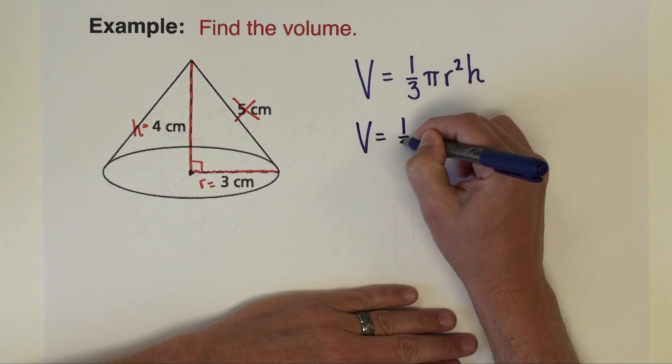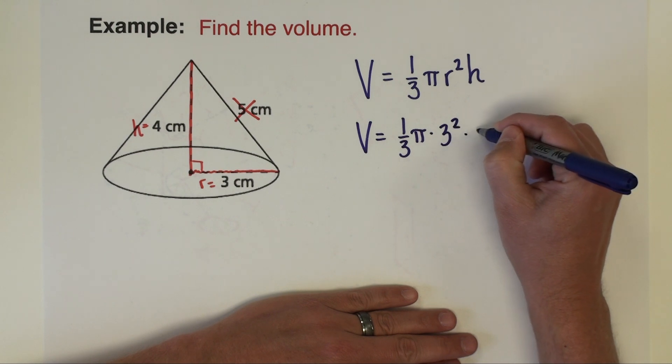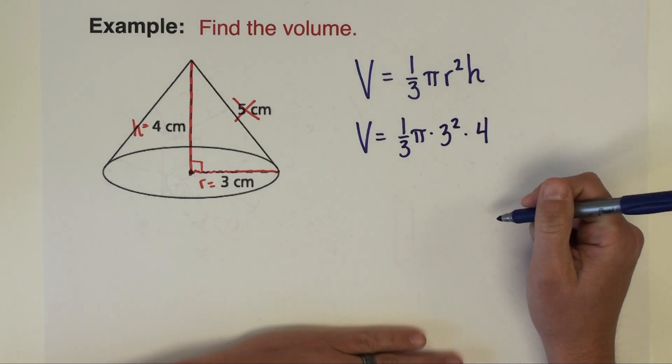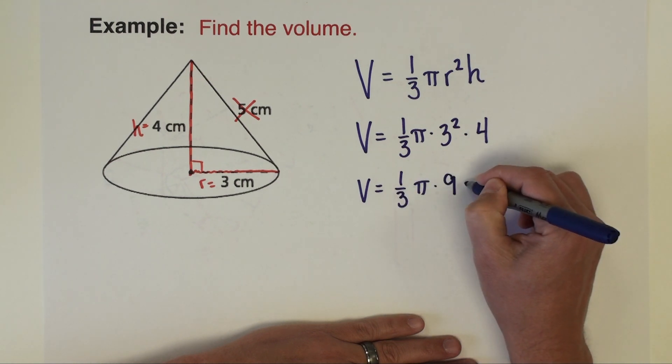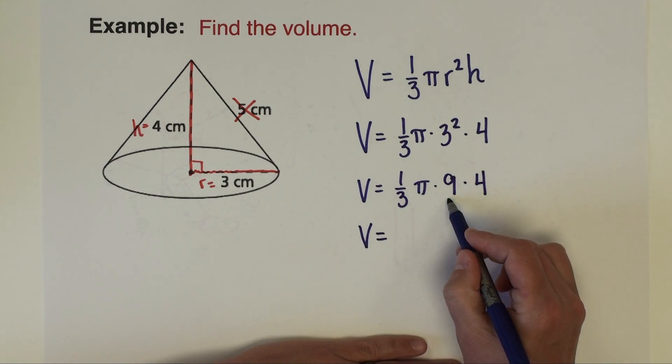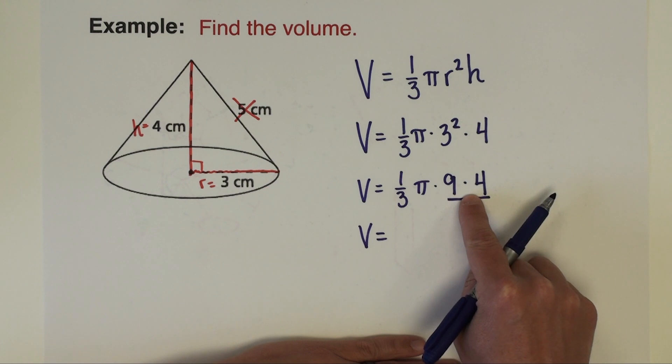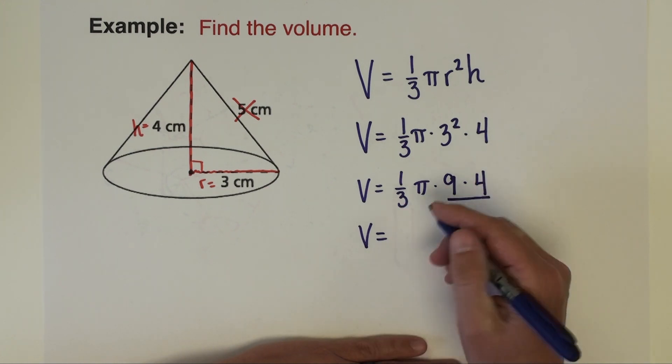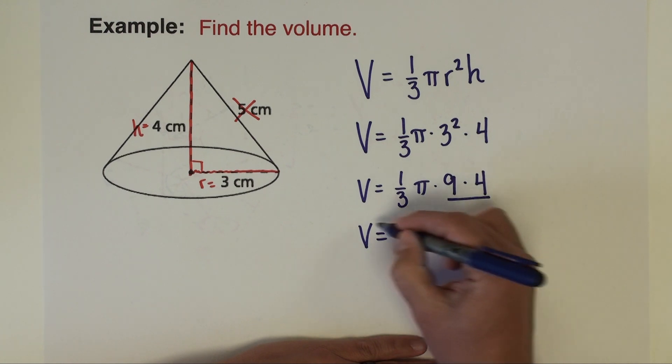Let's plug in what we've got. The volume is one-third pi radius squared, so I want 3 squared times height which is 4. That's one-third times pi, 3 squared is 9, times 4. So volume is going to be, let's see, 9 times 4 is 36, and then one-third of 36 or 36 divided by 3 is 12. So the volume is 12 pi centimeters cubed.